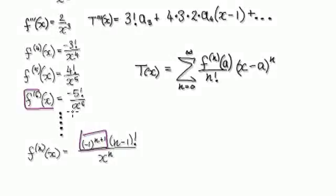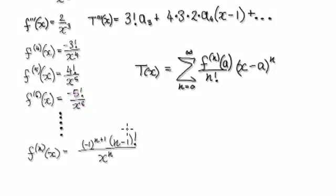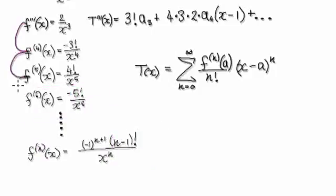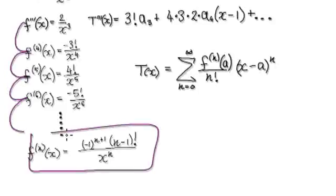Looking at the 6th derivative, this 5 here is always 1 less than the derivative number. So the 6 here corresponds to your n, and the 5 here is n minus 1. The general case would be this.